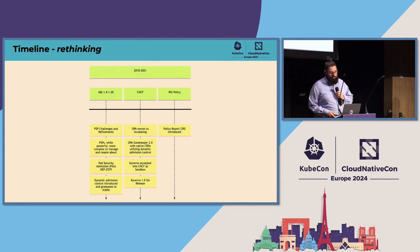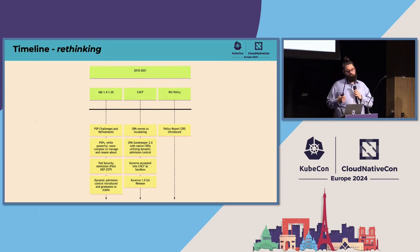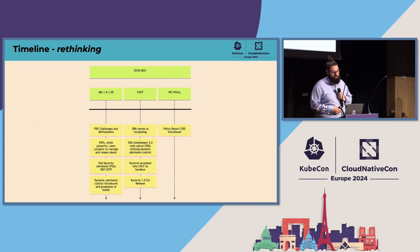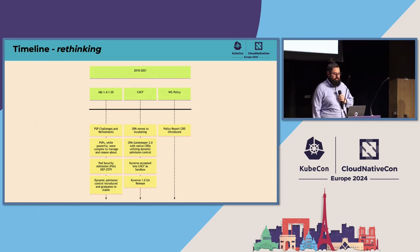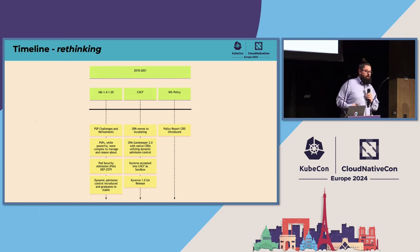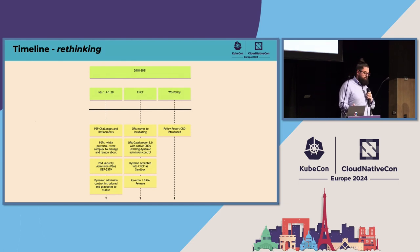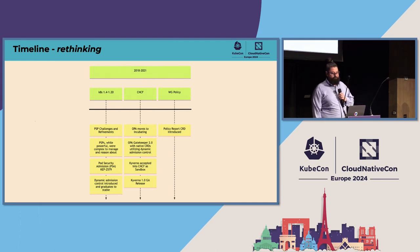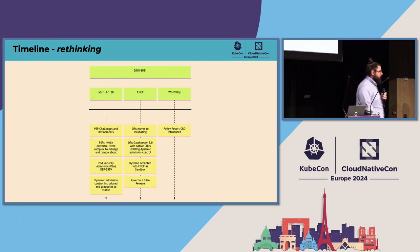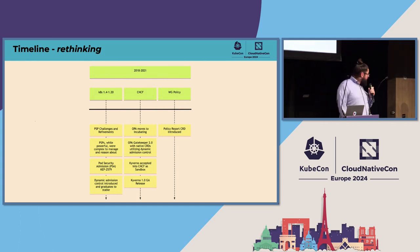Stepping forward to 1.4 through 1.20: PSP was refined, maligned, and people talked poorly about it and didn't adopt it. A KEP was introduced to talk about pod security admission and get us into the future. OPA moved into incubating status and started becoming much more popular. Kyverno entered the CNCF scene with its GA release, and then we got the policy report CRD from the policy working group around 2021.